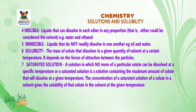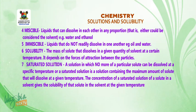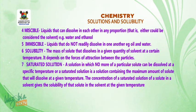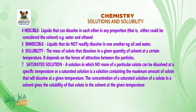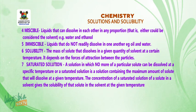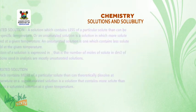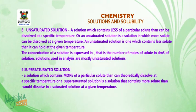Number seven: saturated solution — a solution in which no more of a particular solute can be dissolved at a specific temperature. A saturated solution contains the maximum amount of solute that will dissolve at a given temperature. The concentration of a saturated solution of a solute in a solvent gives the solubility of that solute in the solvent at the given temperature. Number eight: unsaturated solution — a solution which contains less of a particular solute than can be dissolved at a specific temperature.